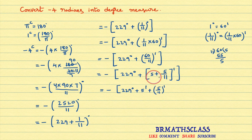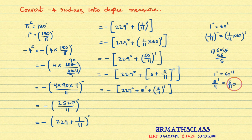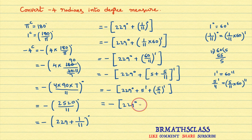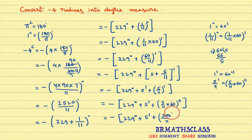So we have minus 229 degrees plus 5 minutes plus 5 by 11 minutes. Now I want to convert 5 by 11 minutes into seconds. In degree measure, 1 minute equals 60 seconds. Multiply both sides by 5 by 11: 5 by 11 minutes equals 5 by 11 into 60 seconds. So the expression becomes minus 229 degrees plus 5 minutes plus 300 divided by 11 seconds.